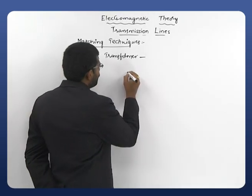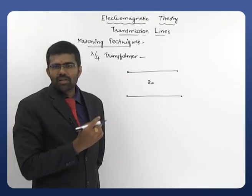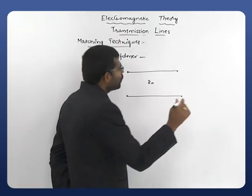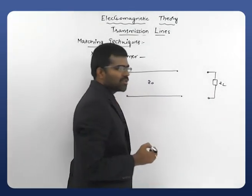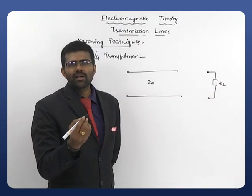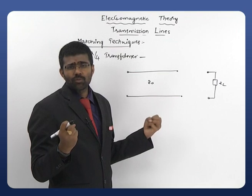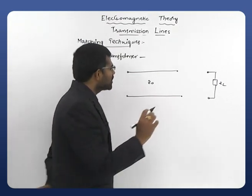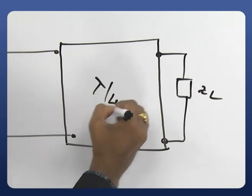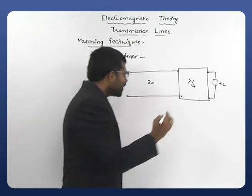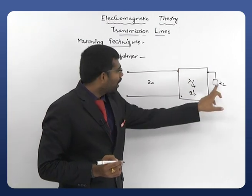Let us take a main transmission line with characteristic impedance Z0. The properties of this main transmission line are unaltered and cannot be changed. Here we have one load ZL, which is also not changeable. Z0 is not equal to ZL. So what I do is connect a lambda by 4 transformer in between the main transmission line and the load. This lambda by 4 transformer with new characteristic impedance Z0' will act as a matching device between our load and Z0.